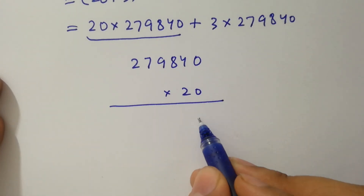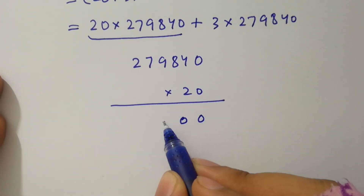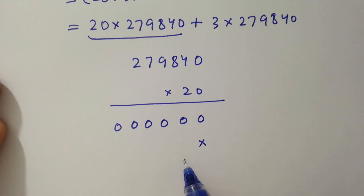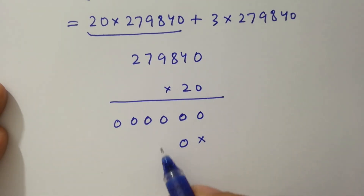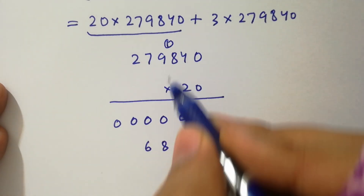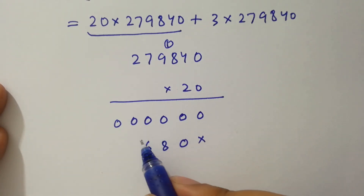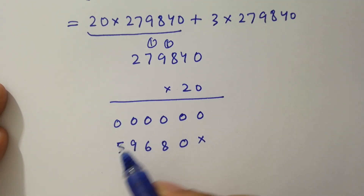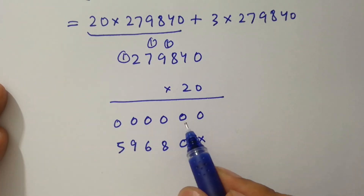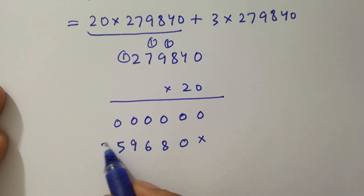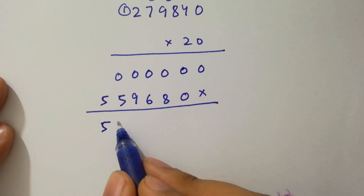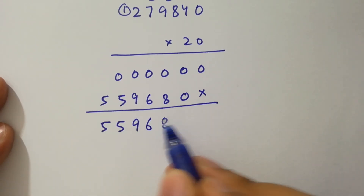Multiplying 279,840 by 20: multiplying each digit by 0 gives zeros for the units place, then multiplying by 2 gives 2 times 279,840. Working through: 2 times 0 is 0, 2 times 4 is 8, 2 times 8 is 16 (write 6 carry 1), 2 times 9 is 18 plus 1 is 19 (write 9 carry 1), 2 times 7 is 14 plus 1 is 15 (write 5 carry 1), 2 times 2 is 4 plus 1 is 5. So 20 times 279,840 equals 5,596,800.